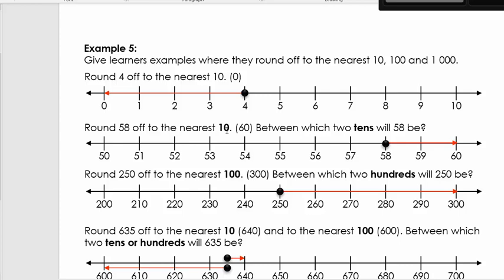Let's look at the next one. Round 58 off to the nearest 10. So the question that I'm going to ask is between which two 10s will 58 be? So it will be between 50 and 60. Here it's 58. So anything from 55 will be rounded off to the nearest 60. So 58 will be rounded off to 60.